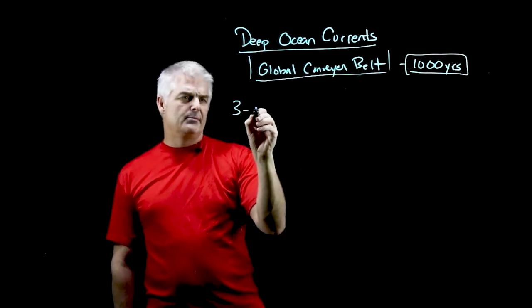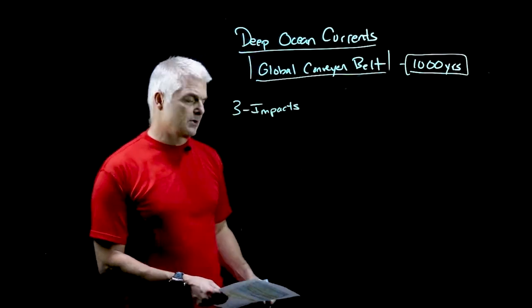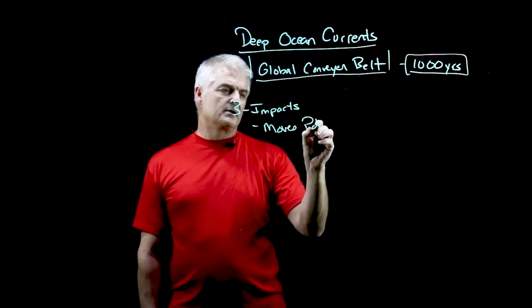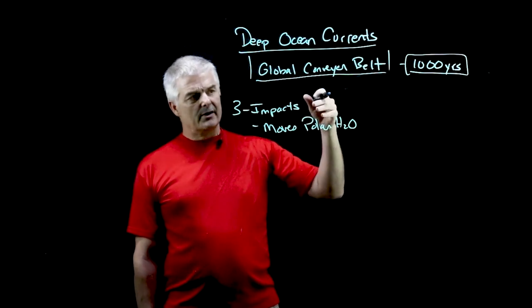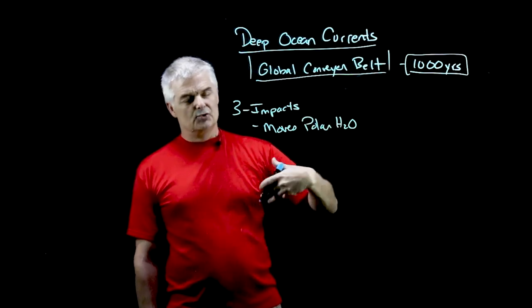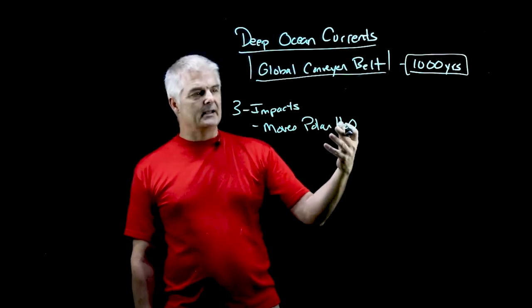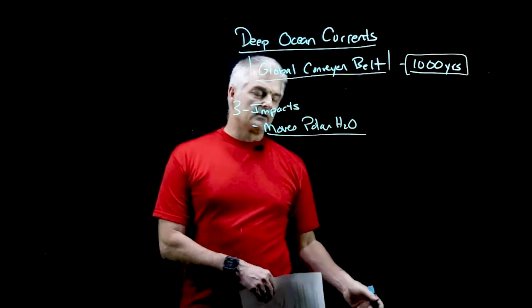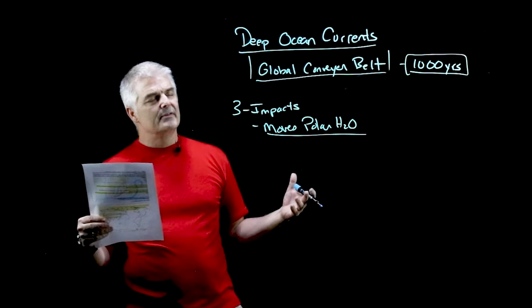So what are three impacts of the global deep ocean conveyor belt? Number one, it moves polar water. The earth gets so much energy, and what happens is some of that warmish water sinks and then recools. So it's a process of moving heat around the earth. That's why we call it thermohaline—it's moving the polar water and making the temperature of the water not so different, so it's important.